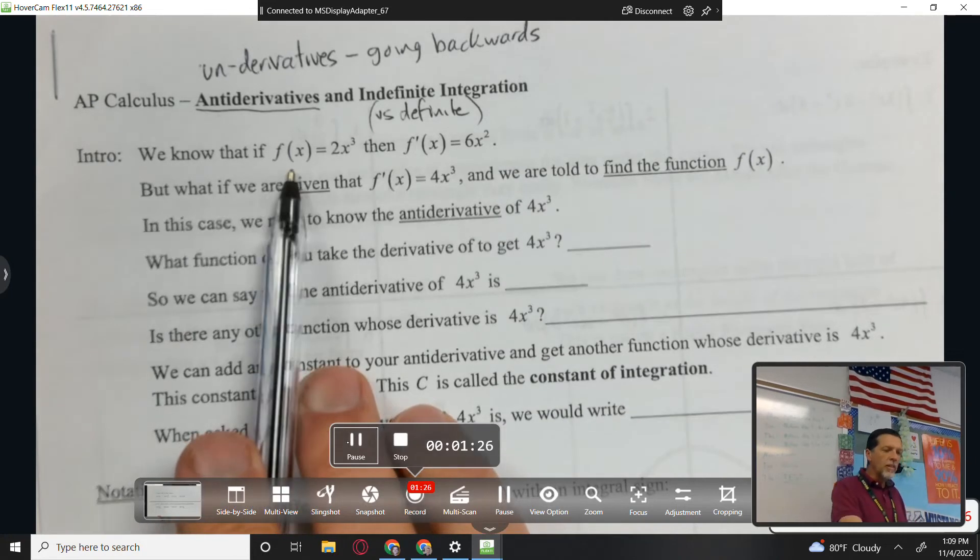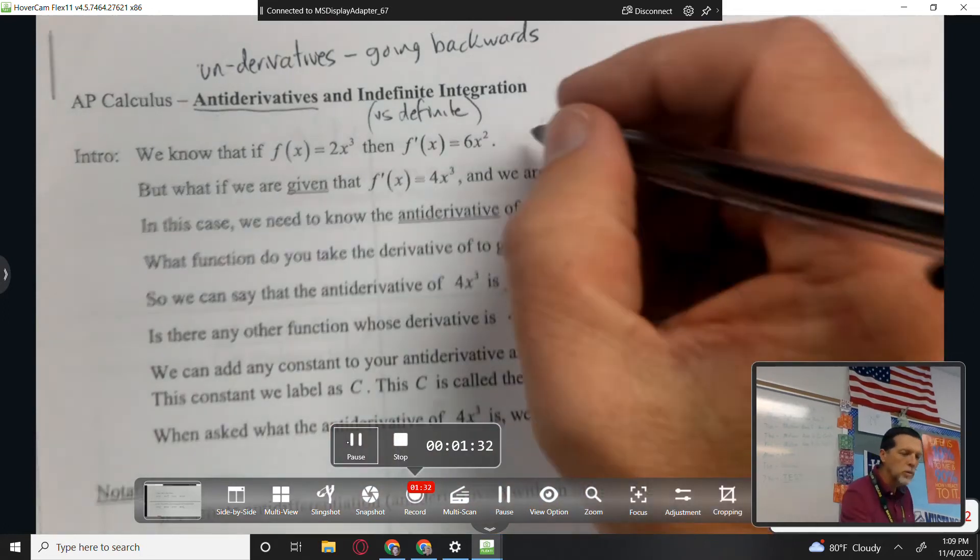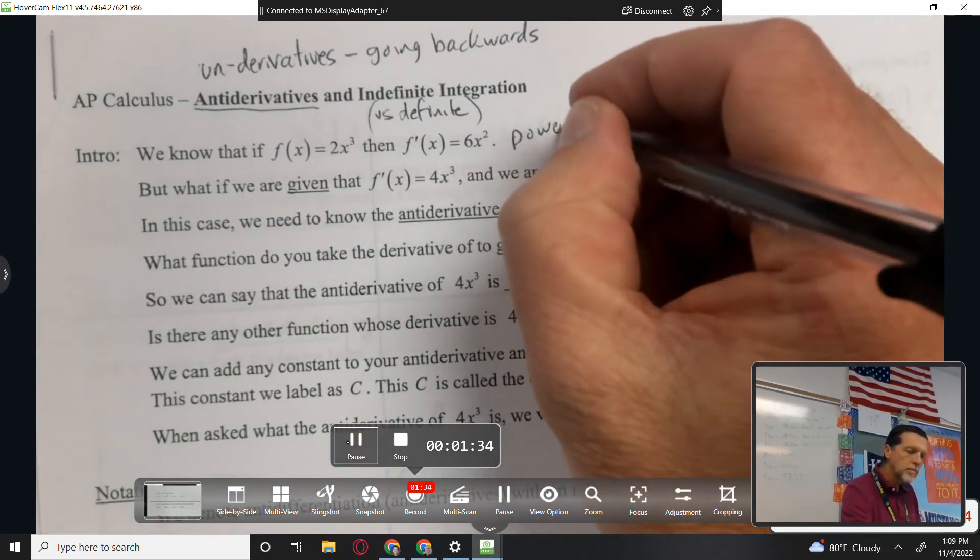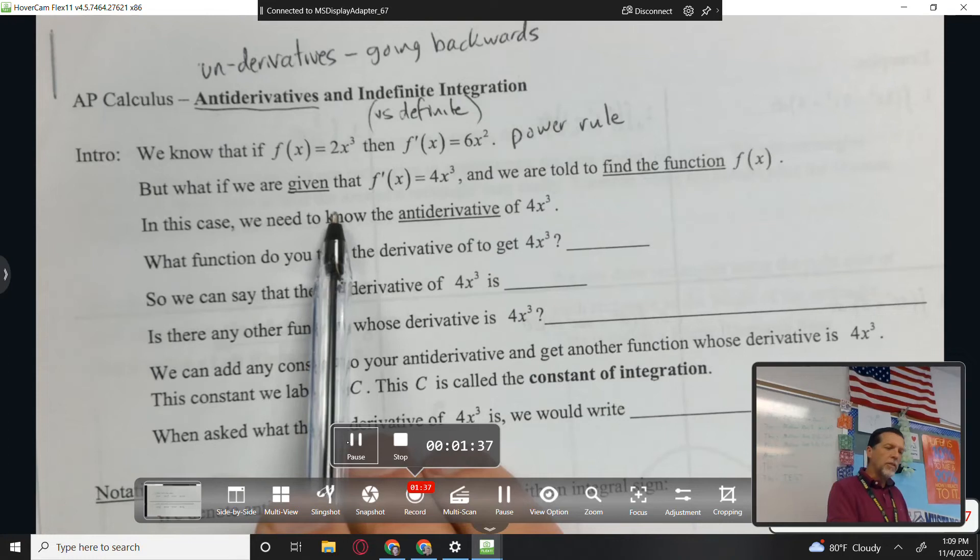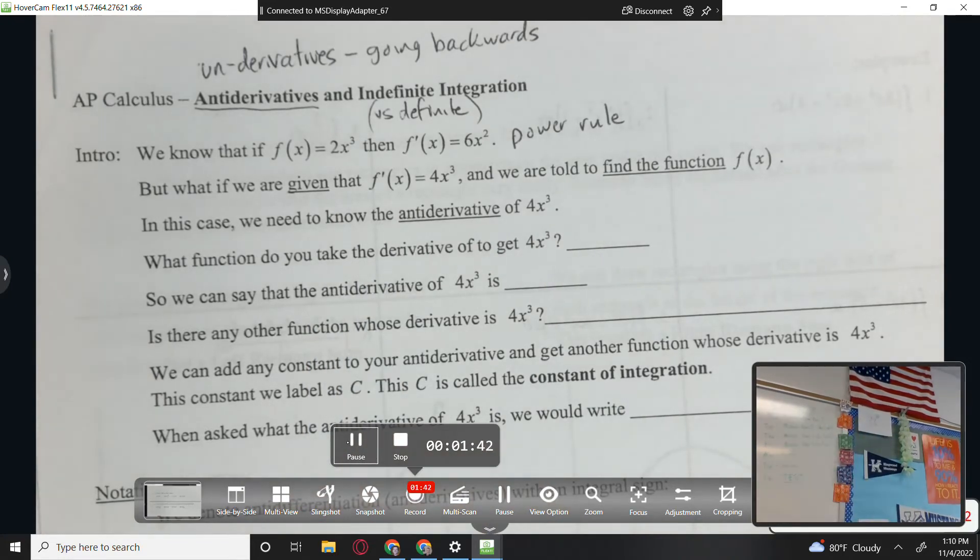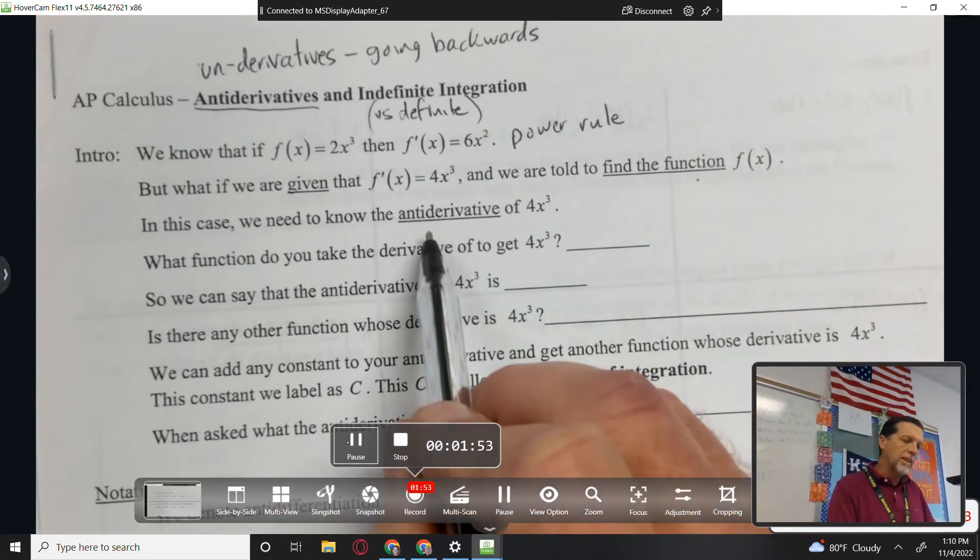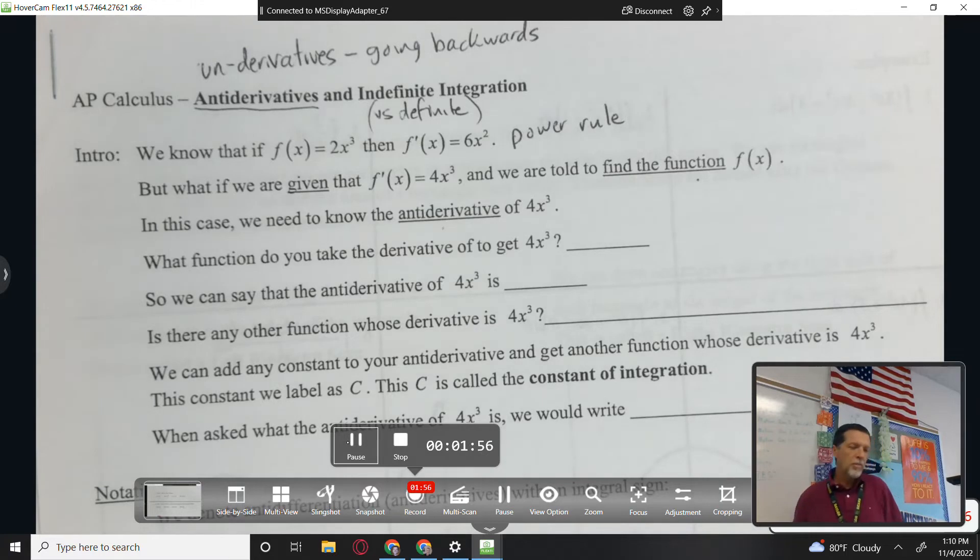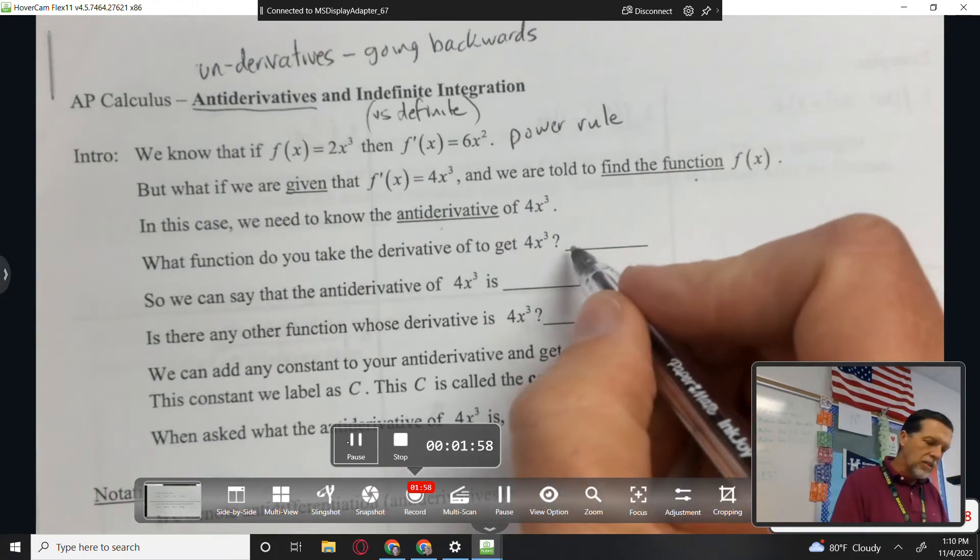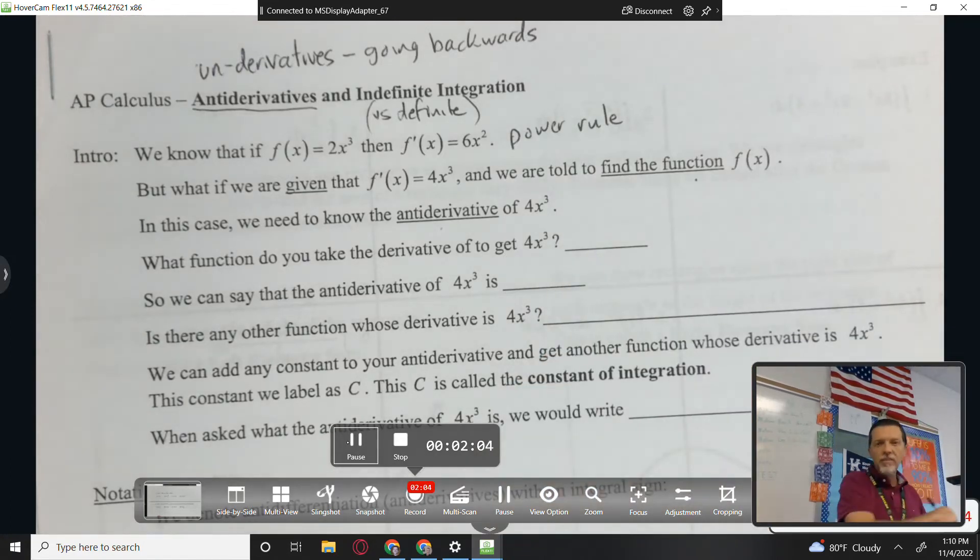All right, we know that if f of x is 2x cubed, then f prime, its derivative, is 6x squared, right? That's the power rule. But what if we're given that f prime is 4x cubed? So we have the derivative rather than the original, and we want to find the function. So we want to go backwards. We want the antiderivative. We want to put the car in reverse and back up. And so what do you think, what function has a derivative of 4x cubed?